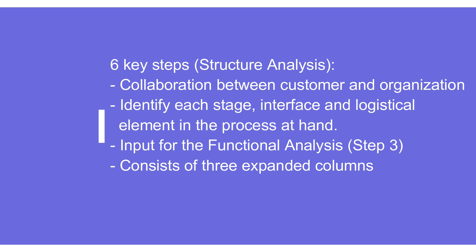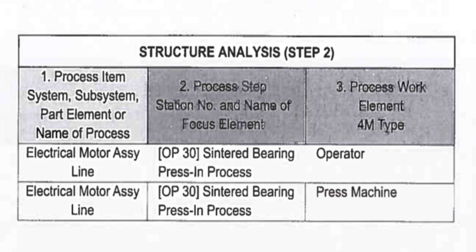In structure analysis we need to identify at each stage what the interface is and what element or requirement is at that moment. This is one of the key changes from FMEA 4th Edition — rather than talking about just the process step, it has been bifurcated into three parts: the process item on the left, the process step as the focus element in the center, and the process work element at the lower level on the right.